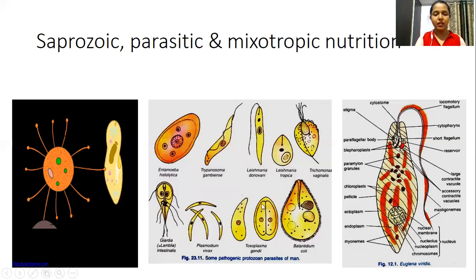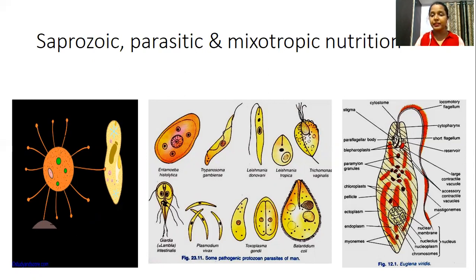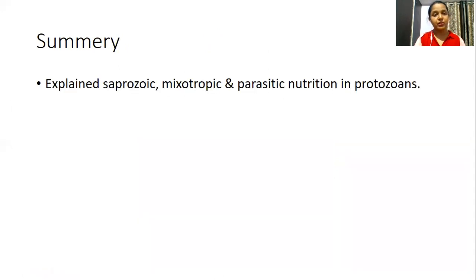These are the parasitic protozoans — Entamoeba, Trypanosoma, Leishmania, and so on — which are actually disease-causing protozoans in various animals. Euglena is the best-quoted example for mixotrophic nutrition. Euglena has both aerobic and anaerobic respiration. In aerobic conditions, it can prepare its own food using chloroplasts and sunlight through photosynthesis, whereas in anaerobic conditions it feeds on organic matter in the surrounding environment.